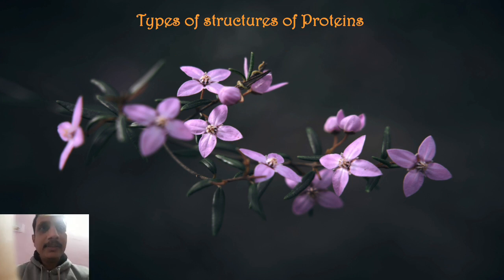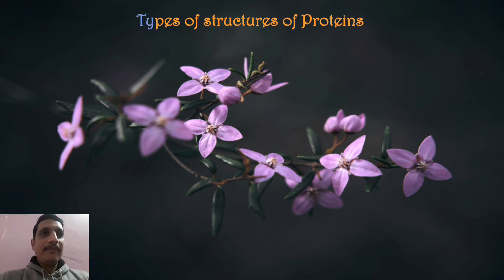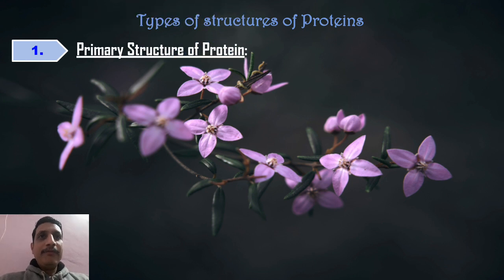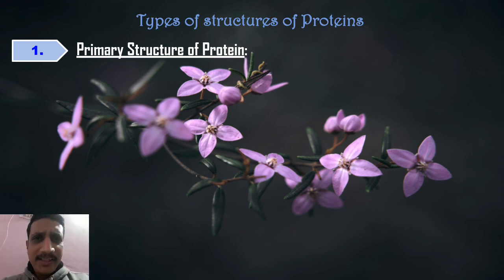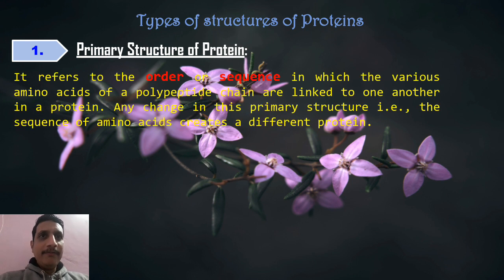Now we will discuss another concept: structures of protein. We have four types of structures. They are primary structure, secondary structure, tertiary structure, and quaternary structure. This concept is important for competitive examinations. First one: primary structure.